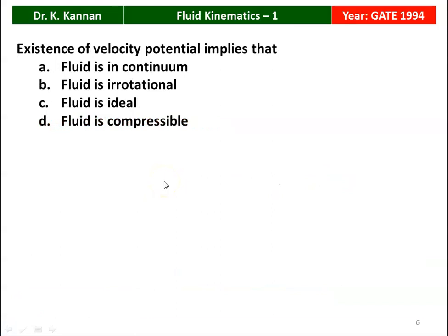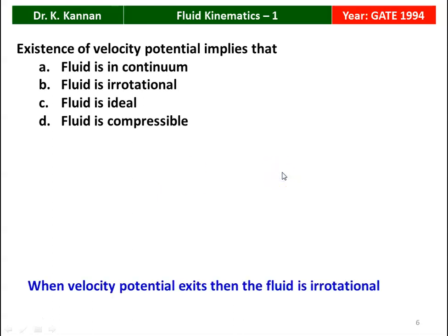The existence of velocity potential implies: fluid is in continuum, fluid is irrotational, fluid is ideal, or fluid is compressible. When velocity potential exists, then the fluid is irrotational. So the answer is option B — the fluid is irrotational.